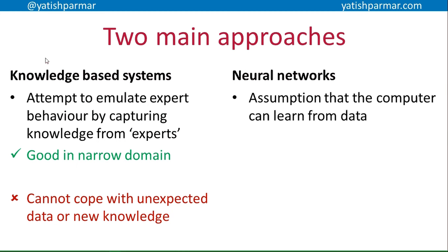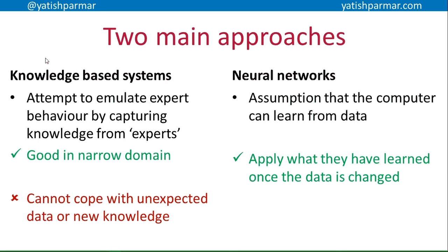Adaptive systems like neural networks assume that a computer can learn from data and train itself, just like humans learn from their environment, create conclusions, adapt, and become better at solving problems. Neural networks can apply what they have learned when the data changes, so they can adapt to a changing environment, which is in clear contrast to a knowledge-based system. However, they can be very, very slow to train and may not even be successful making it through the training process.